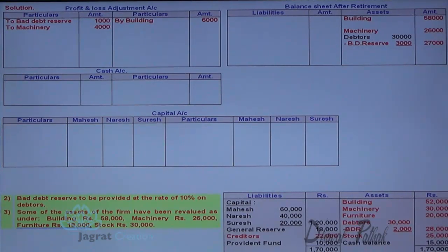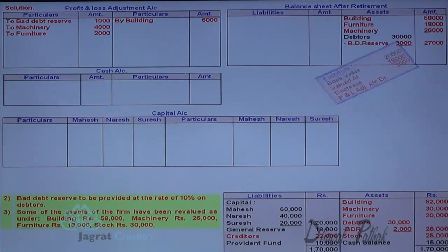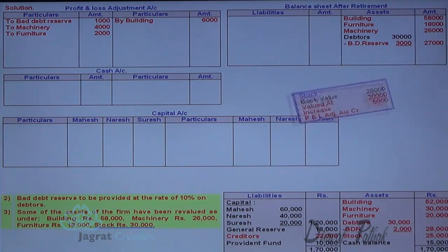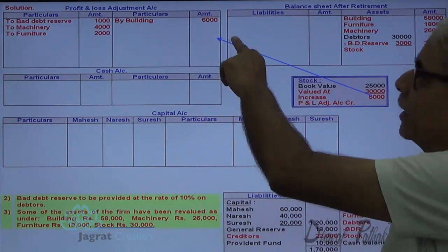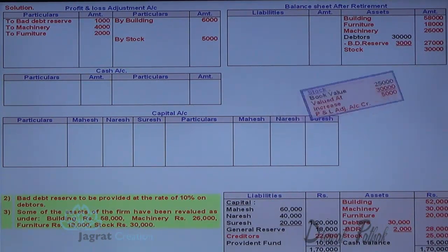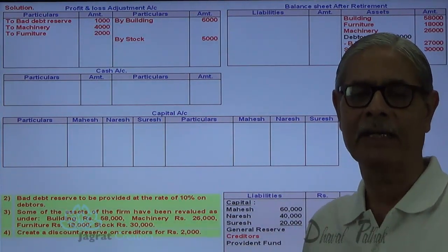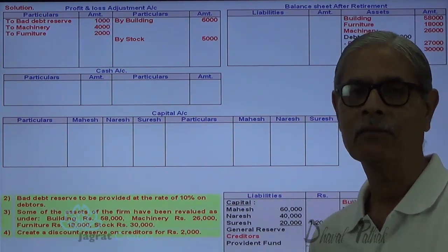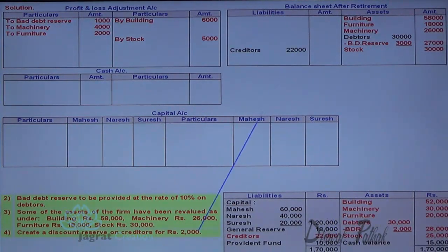Furniture revalued at 18,000 — book value is 20,000, so decrease of 2,000 is debited to profit and loss adjustment account; furniture reported at 18,000 in balance sheet. Stock valued at 30,000 — book value is 25,000, so increase of 5,000 is credited to profit and loss adjustment account; stock appears at 30,000 in balance sheet. For creditors, a discount reserve of 2,000 is created, credited to profit and loss adjustment account, so creditors appear at 20,000.